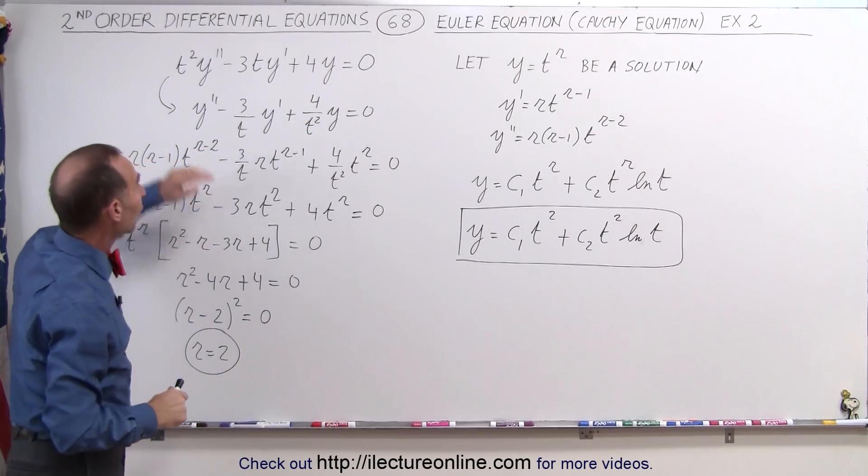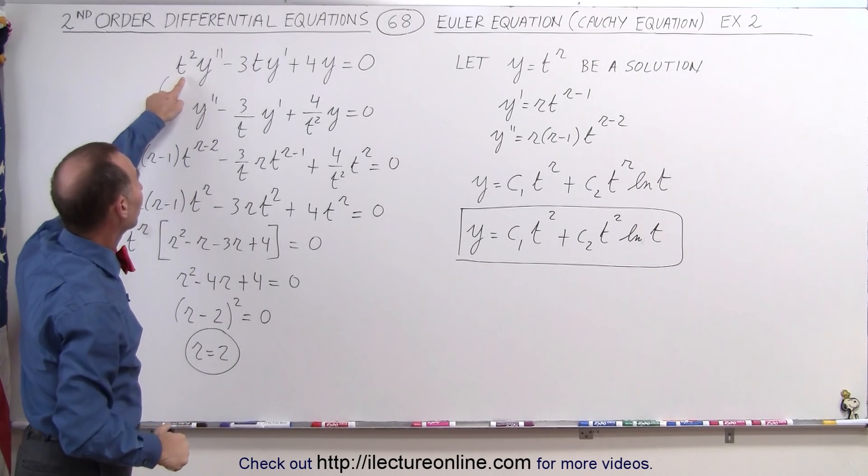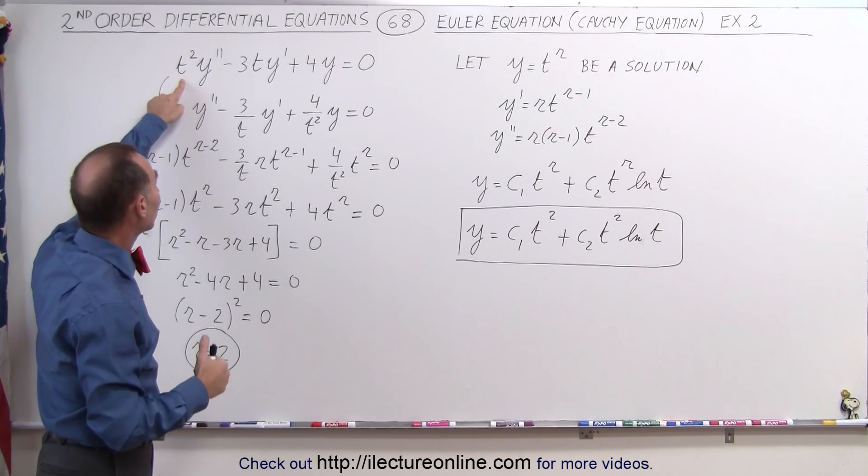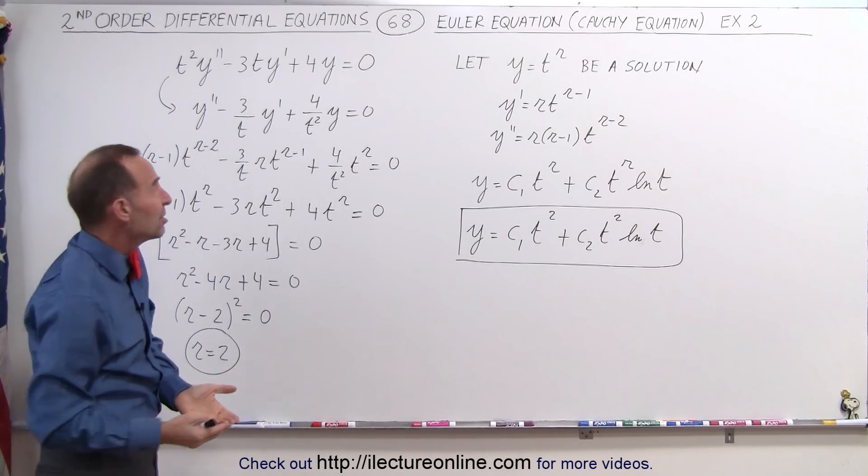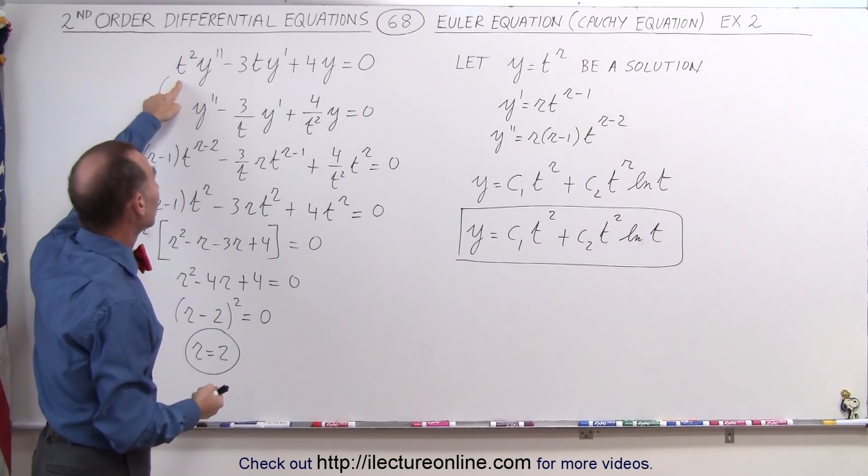Again, recognize it as the Euler equation. Notice that the coefficients not being constant are in the form of t², t, and t⁰. Of course, it doesn't have to be t, it could be x or any other variable.